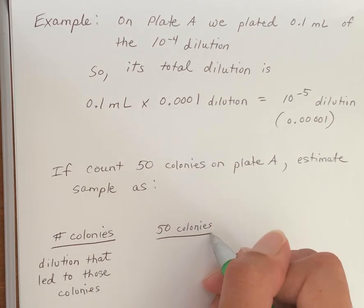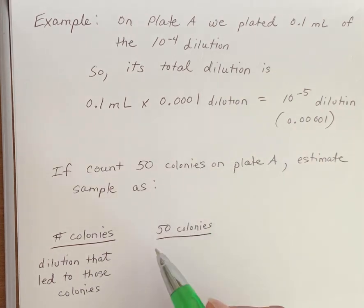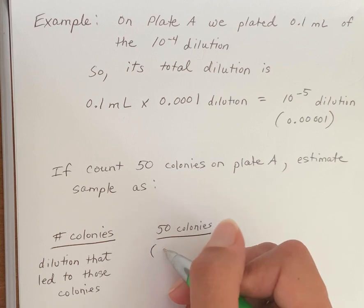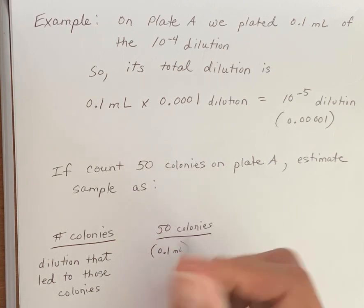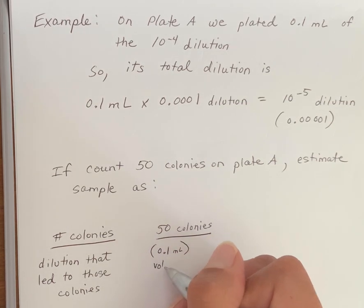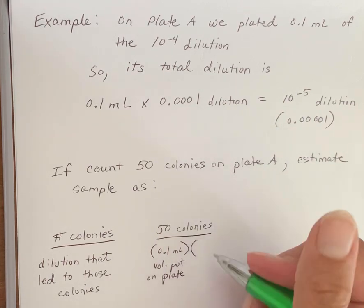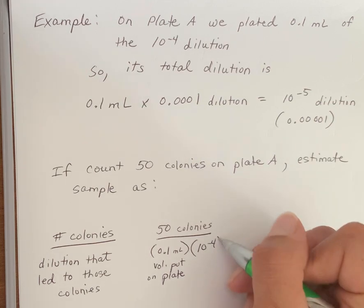So let's say we count at 50, and we're going to divide that by the total dilution. So the volume that you put on the plate, which is the 0.1 mL, times the concentration of that bottle, the 10 to the minus 4.